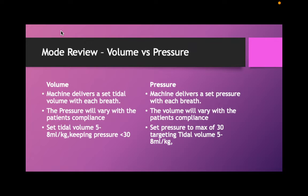In pressure control, the machine delivers a set pressure with each breath and whatever volume the patient gets, they get. If the lung is tight, the machine gives a little bit of pressure but we won't get a lot of volume. If the lung relaxes, we get more volume. So the volume changes breath by breath. An important thing to remember: the machine is measuring how much air leaves and comes back — there's no measurement sitting in the lung. This matters when we get to neonates.